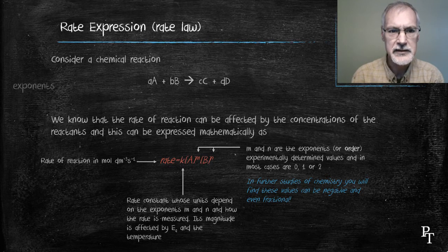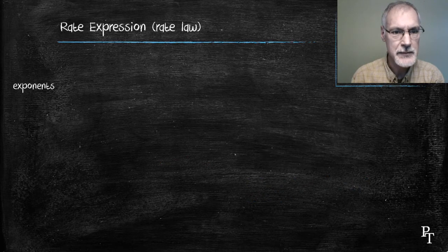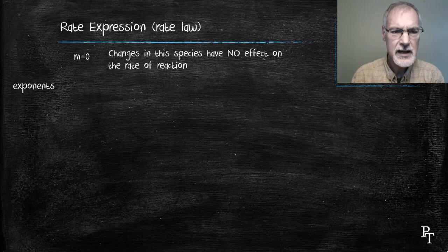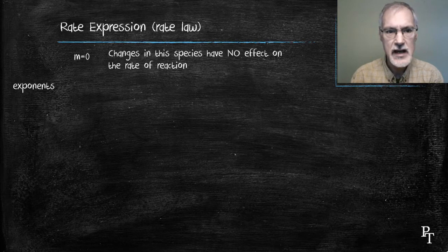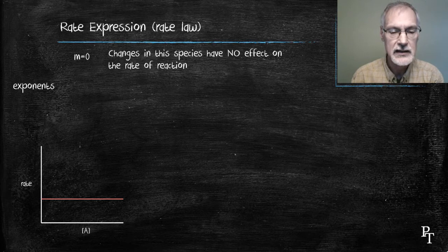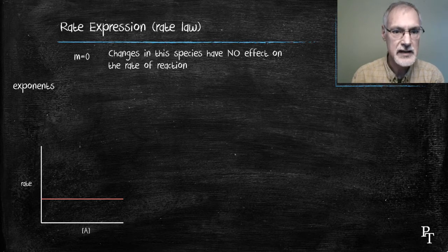Let's look at these experimentally determined exponents for a minute and what they mean. If we have an exponent of 0, what that means is changes in that species have no effect on the rate of a reaction. Graphically, this would look like the following. I change, double, triple, or cut in half the concentration of A, and the rate remains at exactly the same value.